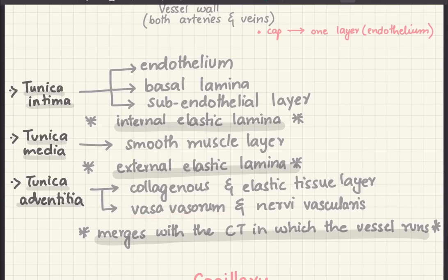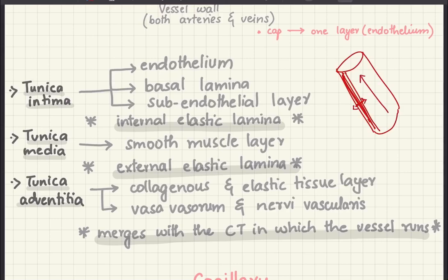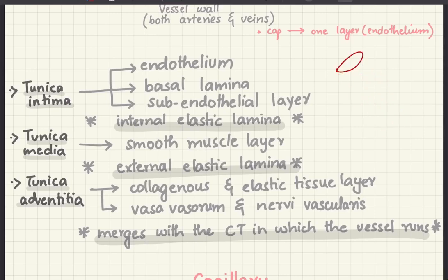The adventitia is the outermost layer and it is collagenous and elastic. One thing to remember is that the tunica adventitia has vasa vasorum — these are basically vessels of the vessels. What happens is that the blood flowing inside the vessel wall supplies some of the intima and the media, but diffusion cannot occur through the entire wall, so we have these vasa vasorum which supply the outermost parts — the adventitia and part of the media.